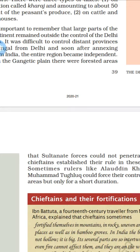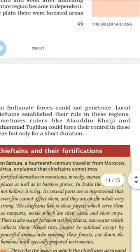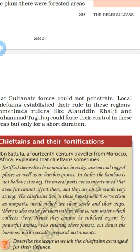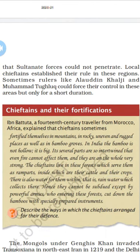In the second chapter, we discussed the Samantas, who declared themselves as independent rulers. Here, the Sultanates were unable to force them into submission — it was difficult for them to control these regions. These local chiefs declared themselves as kings of their own regions.